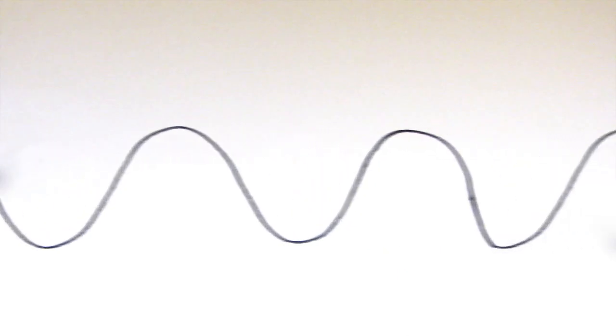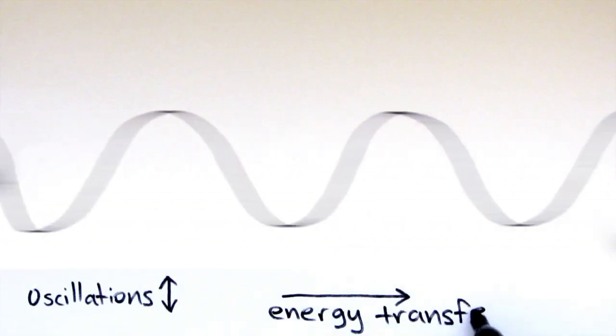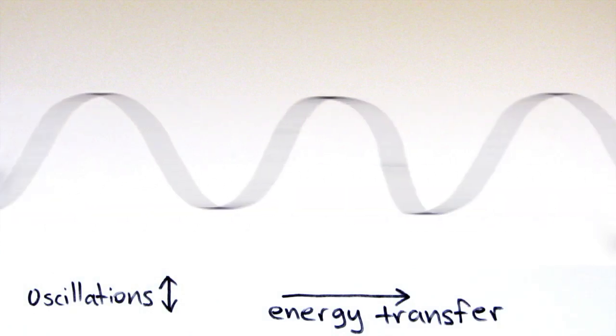There are two types of waves, transverse and longitudinal. In transverse waves, the oscillations are at right angles to the direction of the energy transfer.